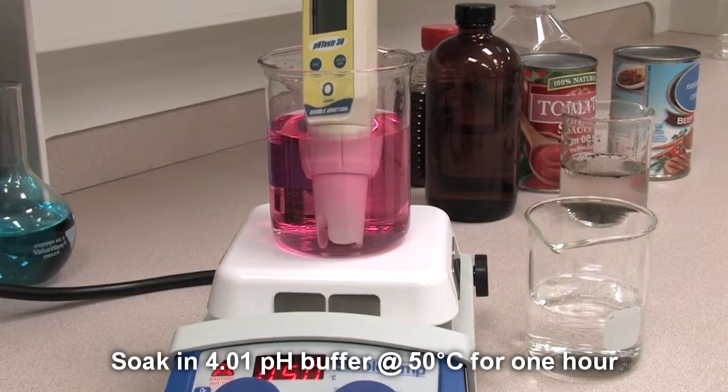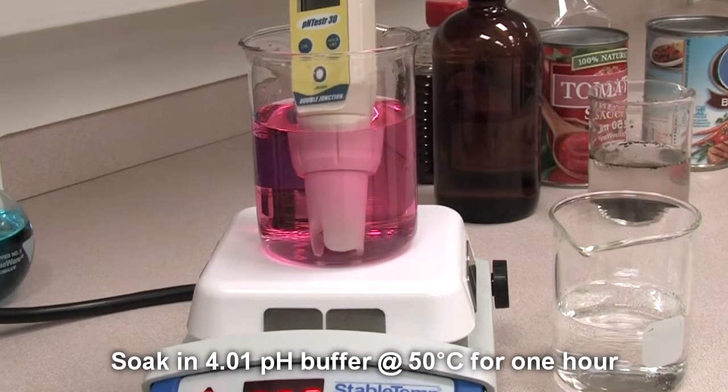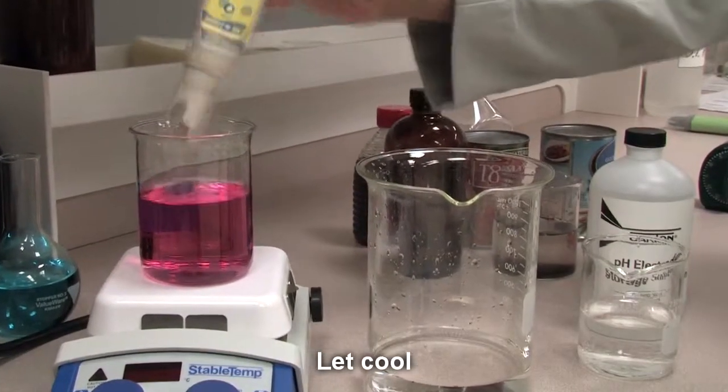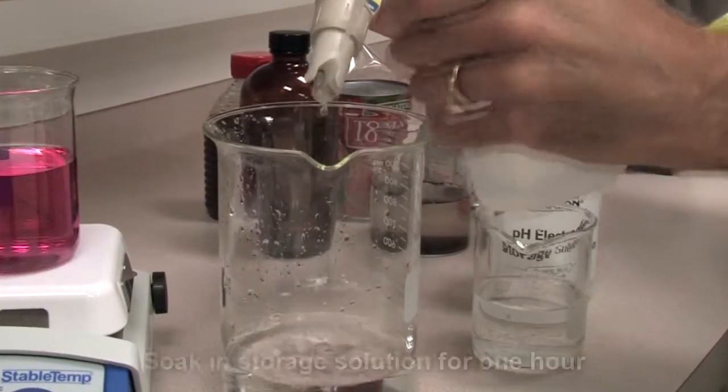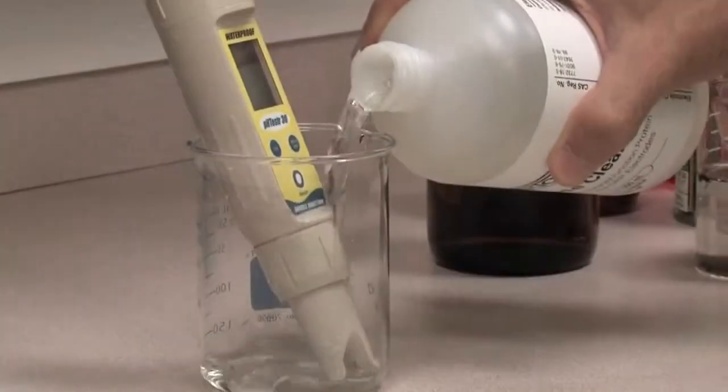Soak the electrode in a 4.01 pH buffer solution heated to 50 degrees Celsius for 1 hour. Allow the buffer to cool down to room temperature, then rinse the electrode with deionized or distilled water and soak for 1 hour in storage solution.